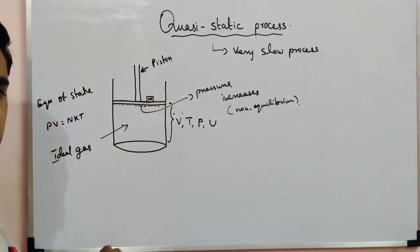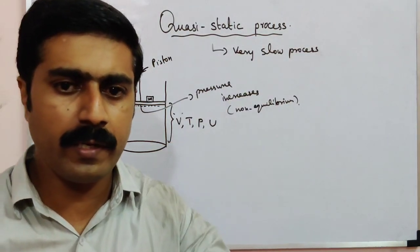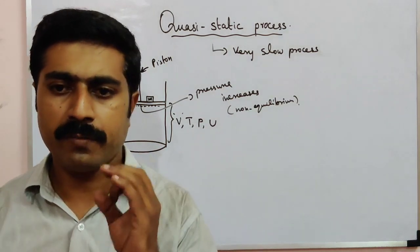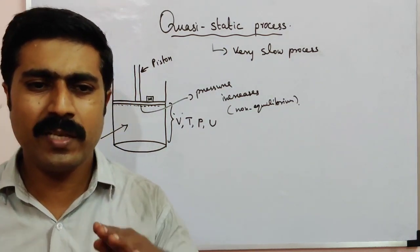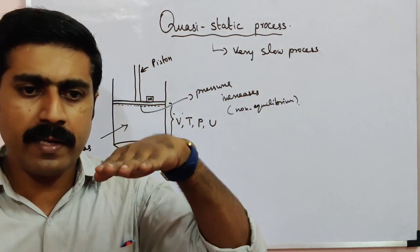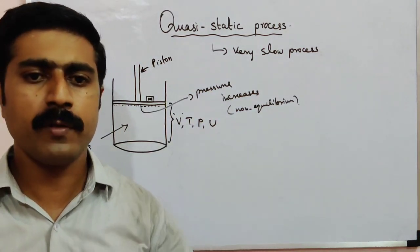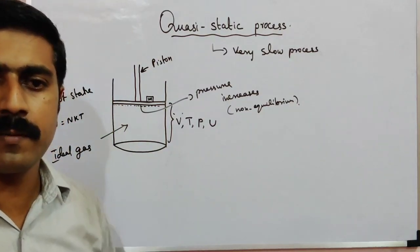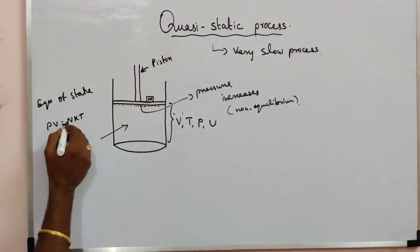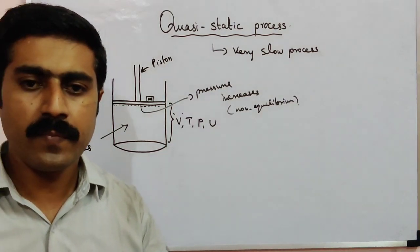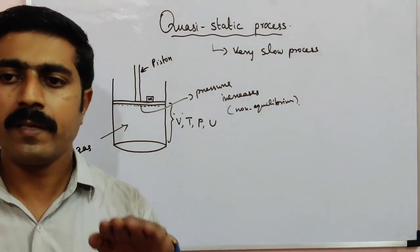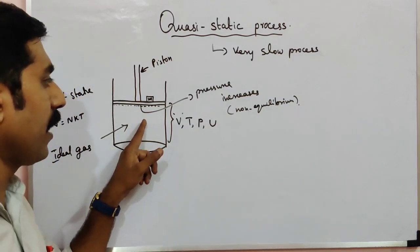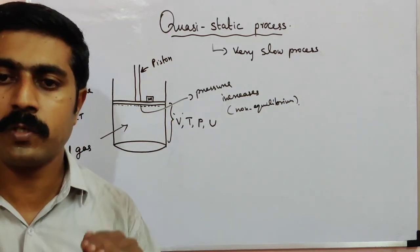Instead, if we move the piston step by step, at each step the system reaches an equilibrium state. With the help of the equation PV = NKT, we can then measure the pressure, volume, temperature, and internal energy of the gas at each step.